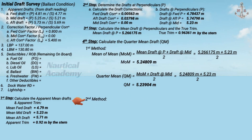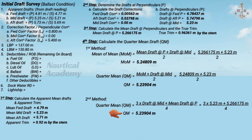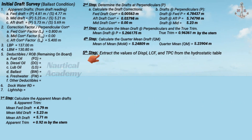There are two methods to calculate the quarter mean draft. In the first method, calculate the mean of mean — which is the mean draft at perpendiculars plus the draft at midship divided by 2, giving 5.24809 meters — then calculate the quarter mean draft by taking the sum of the mean of mean and the draft at midship, divided by 2. The second method is simpler: the quarter mean draft equals 3 times the draft at midship plus the mean draft at perpendiculars, divided by 4. Both methods give a quarter mean draft of 5.23904 meters.